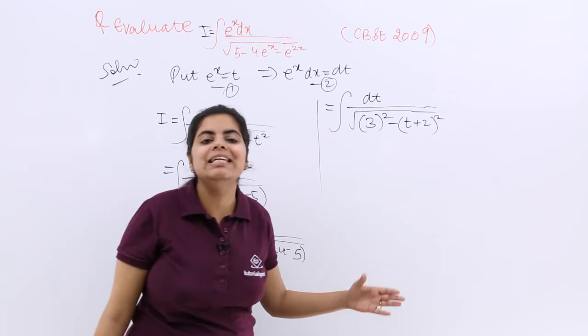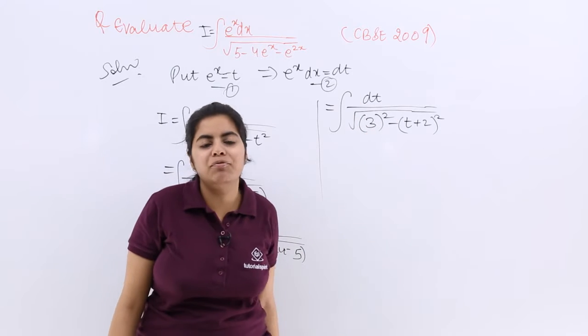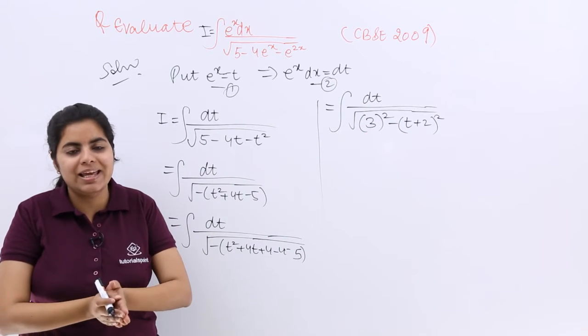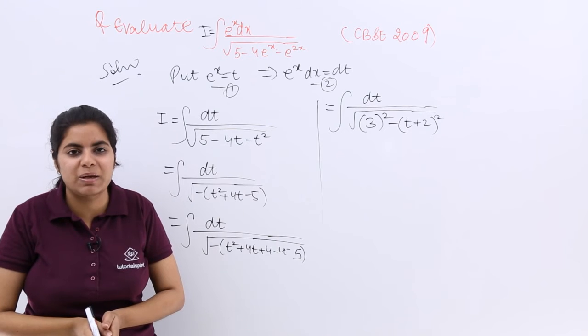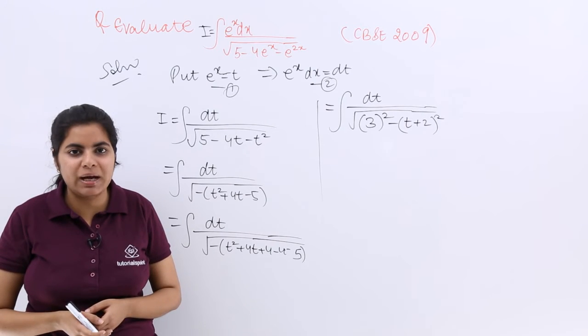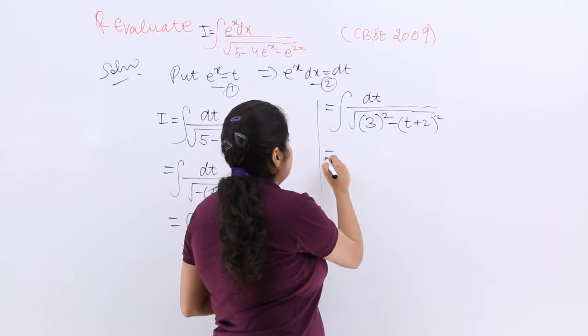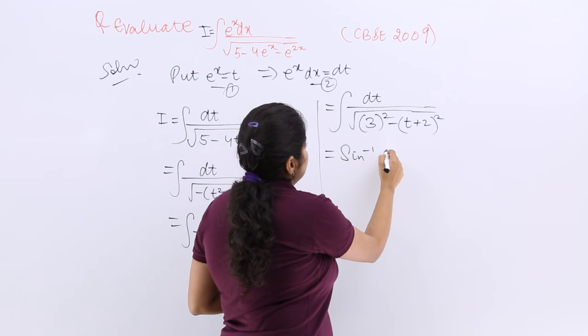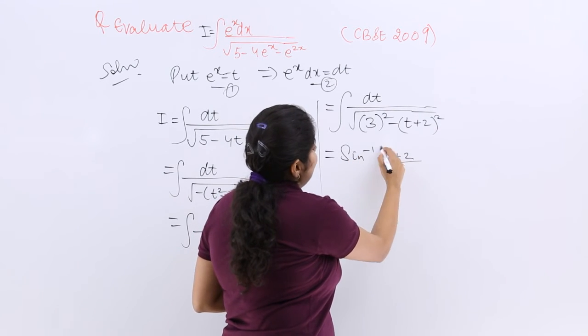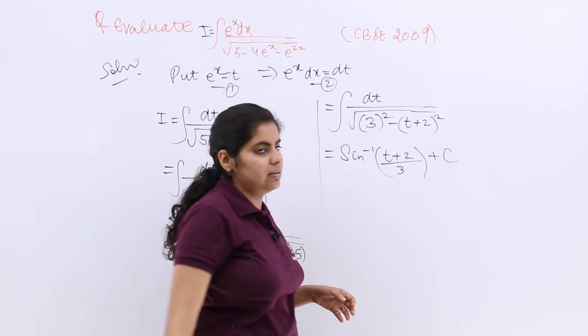Now again easily you can see the formula you have to follow. 1 upon under root a square minus x square when integrated with respect to x. Sine inverse x by a plus c. So here it should be sine inverse x by a plus c.